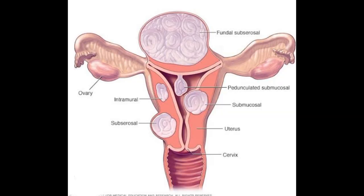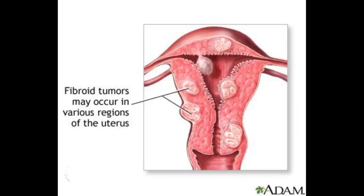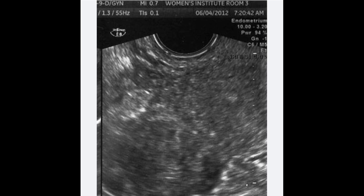It is important to understand anatomy in order to recognize pathology. Today we are going to discuss an important and interesting case of uterine fibroid in a young unmarried female. These fibroids are very common and they usually cause infertility, irregular bleeding, and pressure effects when located in the pelvis. From the picture you can see fibroids that are multiple, involving the uterus and cervix.